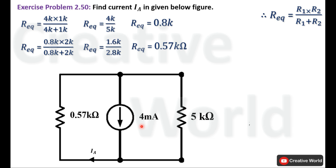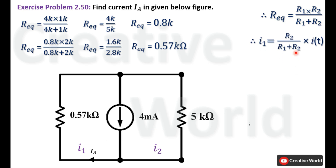We label the branch currents: this branch current is I1 and this branch current is I2. We are interested in I1 because it equals current Ia, as they are in the same branch. The current divider rule equation for I1 is: I1 = (R2 / (R1 + R2)) × I_total, where I_total is the total supplied current of 4mA.